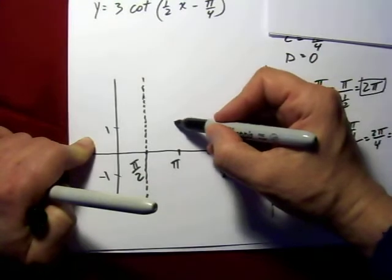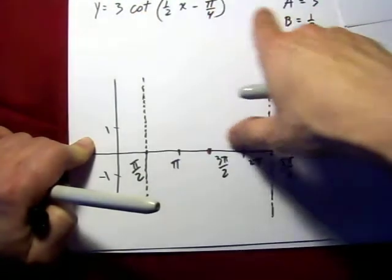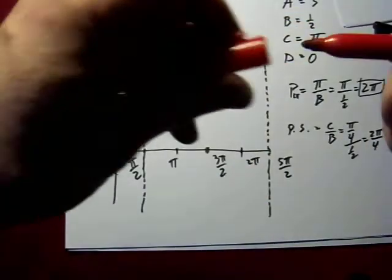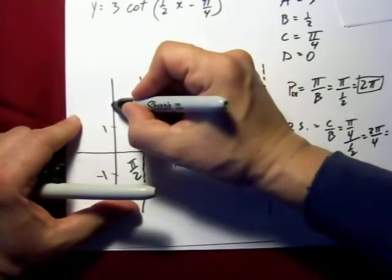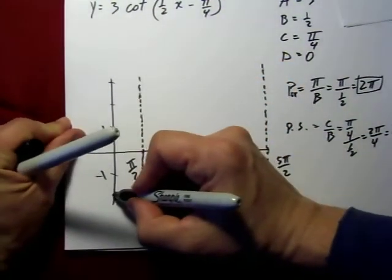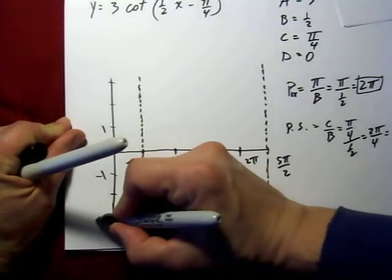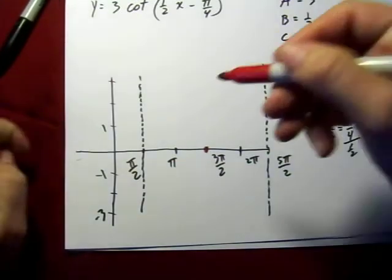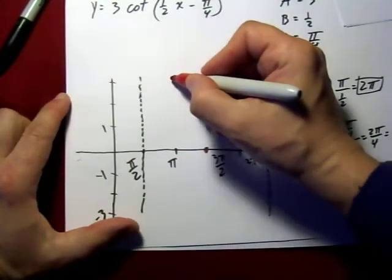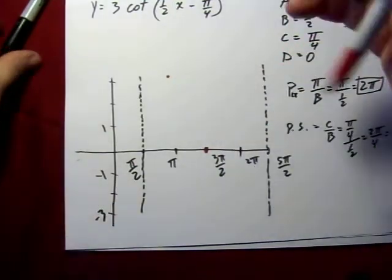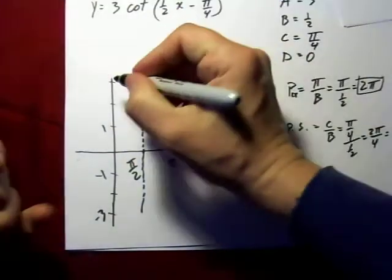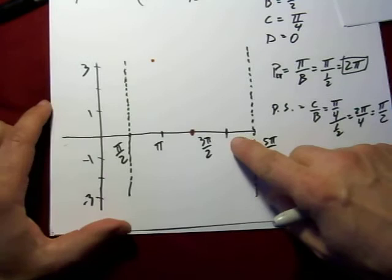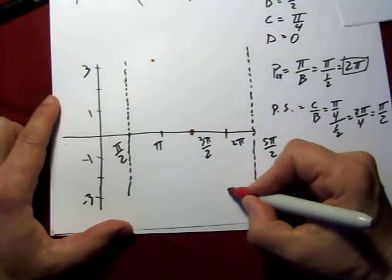Normally, I would put my dots right here and right here. But because the A value is 3, what that has effect is, it stretches it out vertically by a factor of 3. So, let's label 1, 2, 3, negative 1, negative 2, negative 3. And let's put those points down. So, at π, my graph would have a value of, right there, of 3. And, on the negative side, at 2π, it would have the value of negative 3.